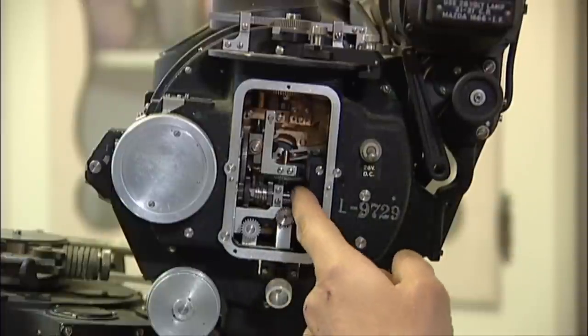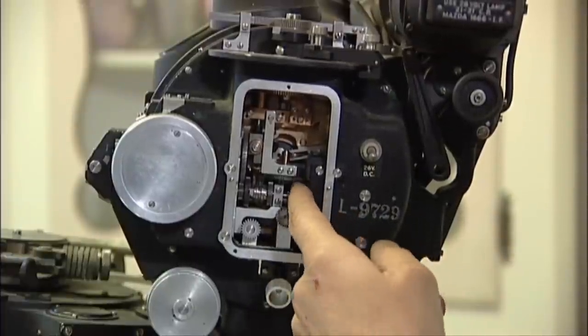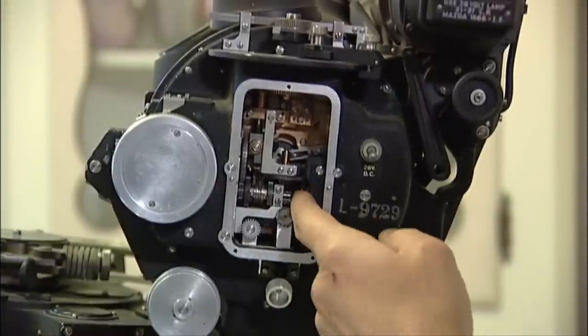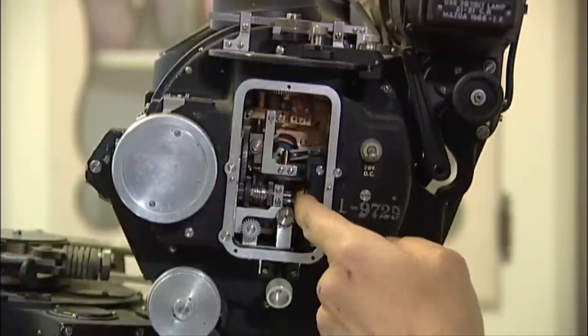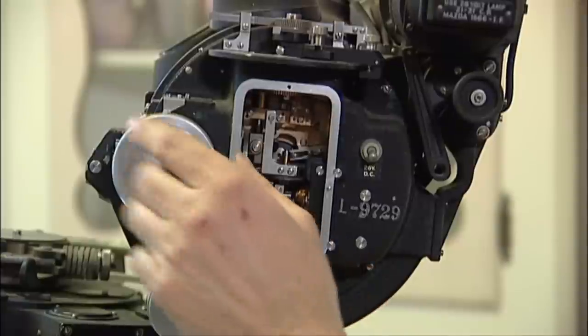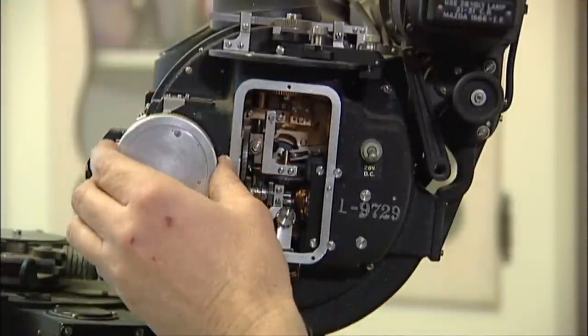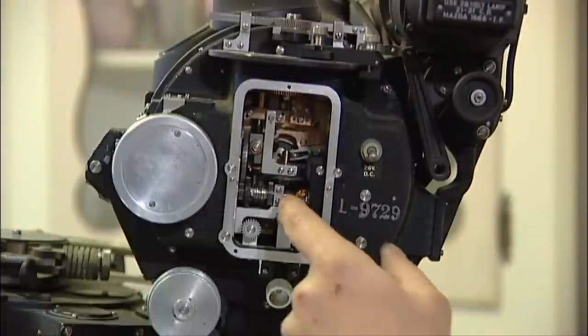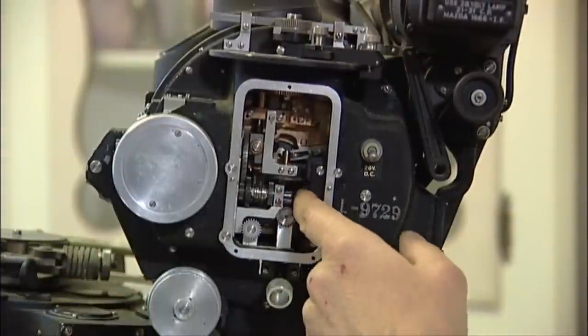You should be able to reach in with your finger and turn this little DC motor here. It's a variable speed motor. This is actually a variable resistor on this airspeed control that varies the voltage to this little motor here.